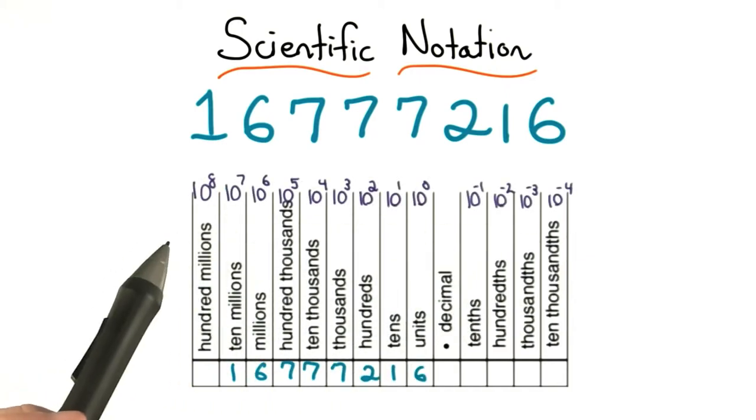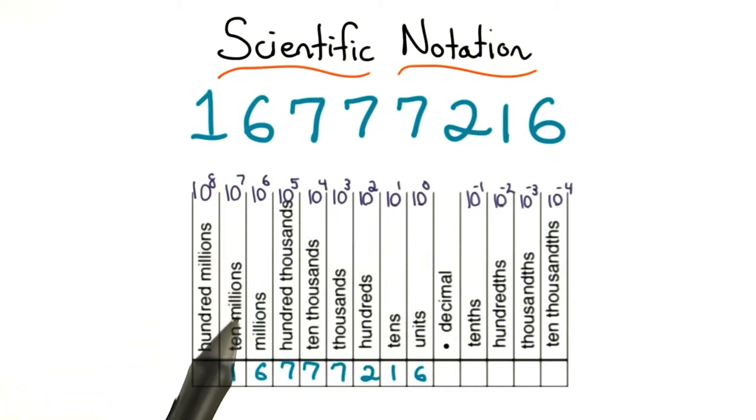Notice too that if I add the powers of 10 to my chart, I can see that the 10 millions is 10 to the 7th. So, this number is on the order of 10 to the 7th, or 10 millions.